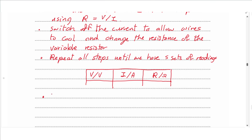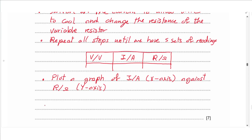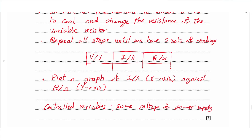Plot a graph of I per ampere on the x-axis (independent variable) against R per ohm on the y-axis (dependent variable). Note controlled variables: use the same power supply voltage, same lamp, same equipment throughout. This was the end of the exam. I hope you enjoyed this video and found it useful. Keep practicing and I will see you in another video.